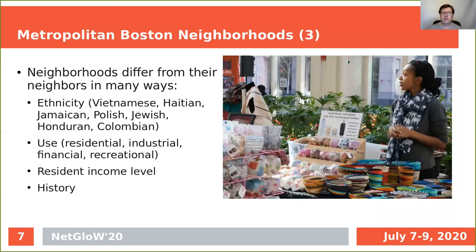There are about 375 granular neighborhoods within Route 128, which has been traditionally considered the boundary of metropolitan Boston. Neighborhoods in Boston differ from their neighbors in many ways — in the first place by ethnicity. There are neighborhoods with predominant Vietnamese, Haitian, Jamaican, Polish, Jewish, Honduran, Colombian, Russian populations, and so on. They differ in use: some neighborhoods are mostly residential, some are industrial, some are financial, and some are recreational.